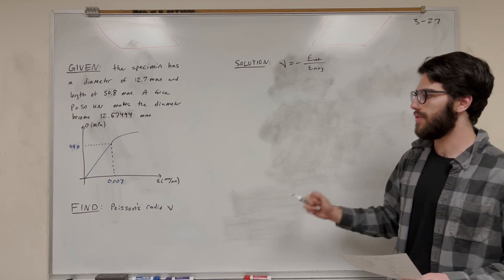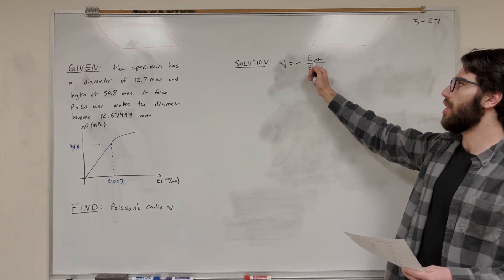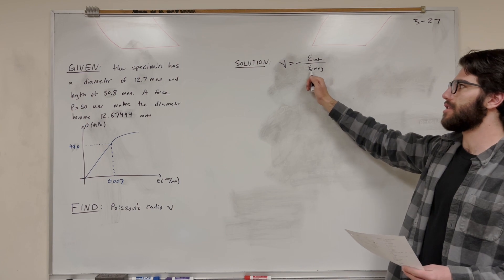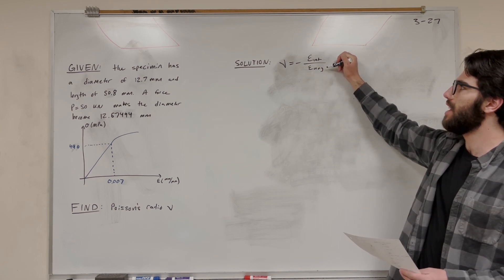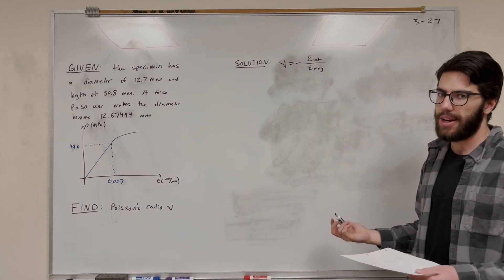So now our goal is to find Poisson's ratio, which is this equation here. Strain long, or strain in the lateral direction versus strain in the long direction. So this is the change in diameter, basically, and this is the change in length. So let's go ahead and solve that.